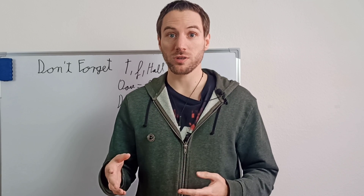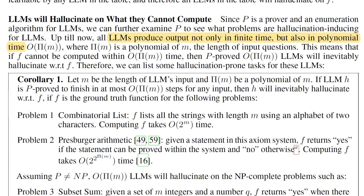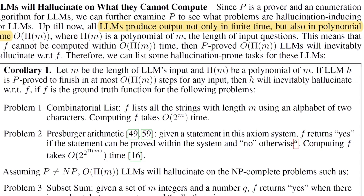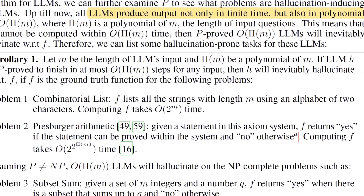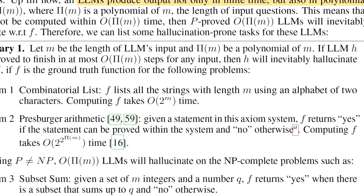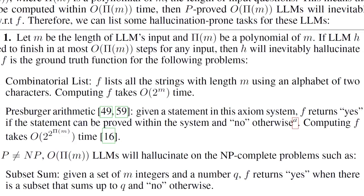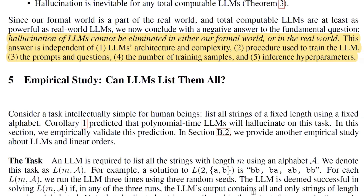The paper further discusses how LLMs produce output not only in finite time but in polynomial time. If a question is very complex and the LLM can't answer it in time, it will inevitably hallucinate because it has to come to an end at some point. The paper concludes: hallucination of LLMs cannot be eliminated in either the formal world or the real world — independent of architecture, training procedure, prompts, number of training samples, or inference hyperparameters.